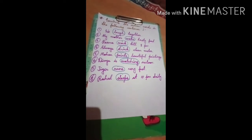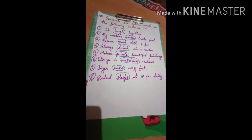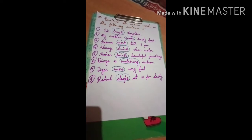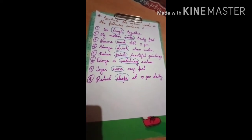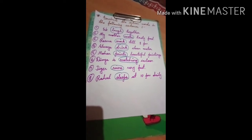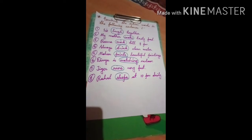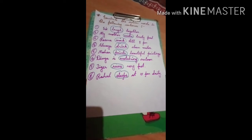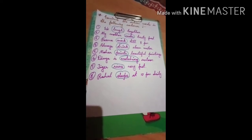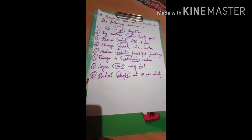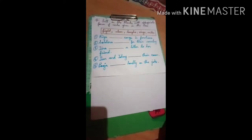Last question — 'Rahul sleeps at 10 PM daily.' The action word is 'sleeps.' So the action words we found are: laugh, cooks, work, drink, paints, watching, runs, and sleeps. Now we will solve the next question, that is Question two.